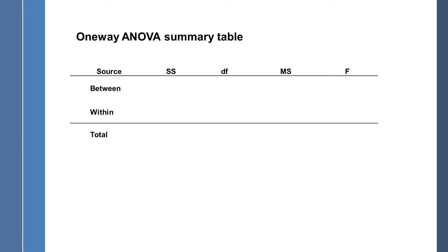Here's a one-way ANOVA summary table. Normally you would calculate the between-group sum of squares and the total, and then use the shortcut for within. The shortcut is simply that between plus within equals total, so you just get the remainder: total minus between gives you the within.